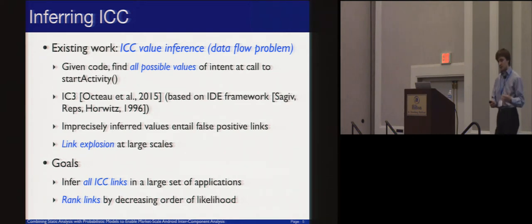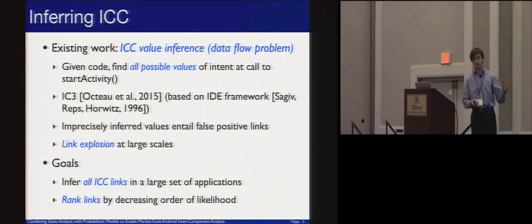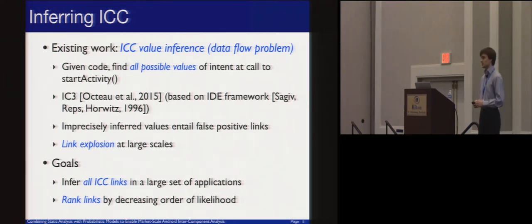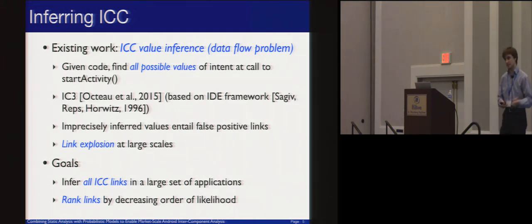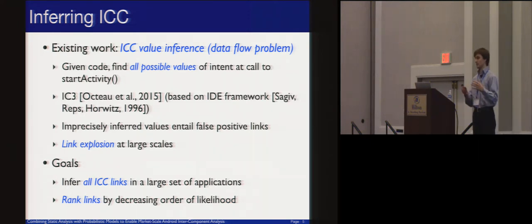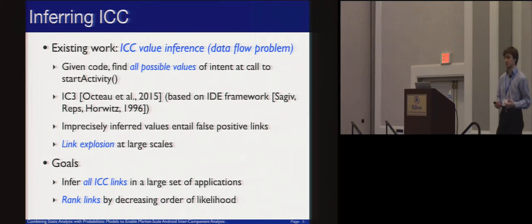The goal of the work I'm presenting today is twofold. First, we want to find all inter-component communication links in a large set of applications. Once we have these ICC links, we want to prioritize them. To give you an idea: when we started testing at the level of a single device, the order of magnitude of links was around a million. Many are false positives, so we need a way to sift through them.